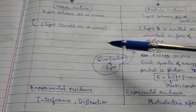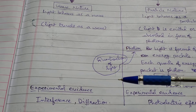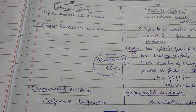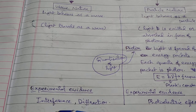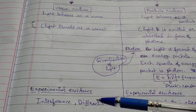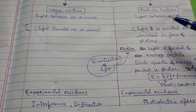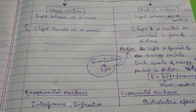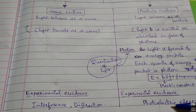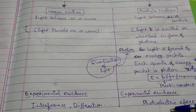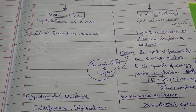Light wave nature भी show करता है और particle nature भी show करता है। यह experiments से पता चला — जिनमें light ने interference और diffraction show किया। Interference and diffraction phenomena shown by light represent that it follows wave nature. Another experimental evidence for particle nature is the photoelectric effect and also the Compton effect. Photoelectric effect, जिसे Einstein ने explain किया था, यह establish करता है कि light की particle nature भी होती है। So light has dual nature — both wave and particle nature.